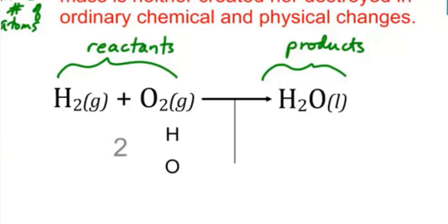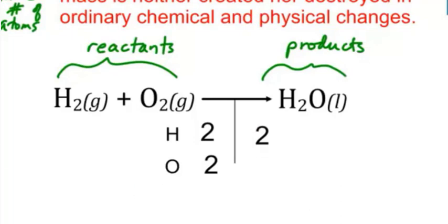On the reactant side, we have two atoms of hydrogen and we also have two atoms of oxygen. On our product side, we have a two for our hydrogen again, but we only have one for our oxygen. So this is not a balanced equation. We're going to balance it.